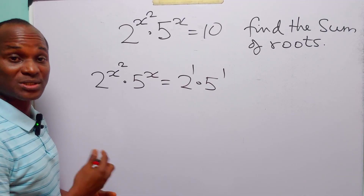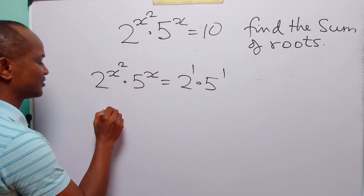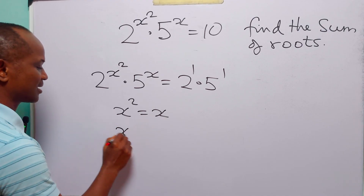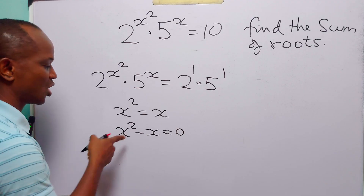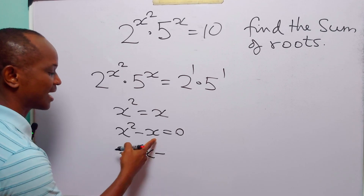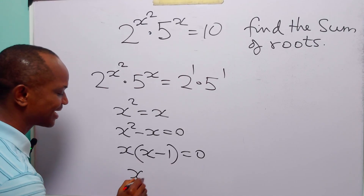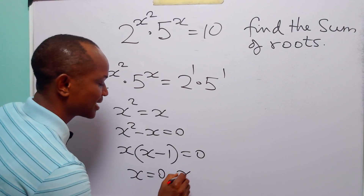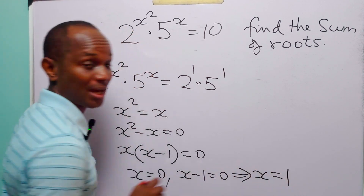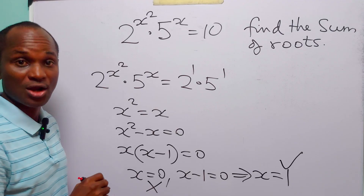The second group of people will say, since 1 is equal to 1, then x squared must be equal to x. And they do x squared is equal to x. From here, we have that x squared minus x is equal to 0. When we factorize, we have x times x log 2 minus 1, and x divided by x is 1, and this is equal to 0. From here, we have that either x is equal to 0 or x minus 1 is equal to 0, giving x is equal to 1. Once more, we have 1 right root and 1 wrong root.